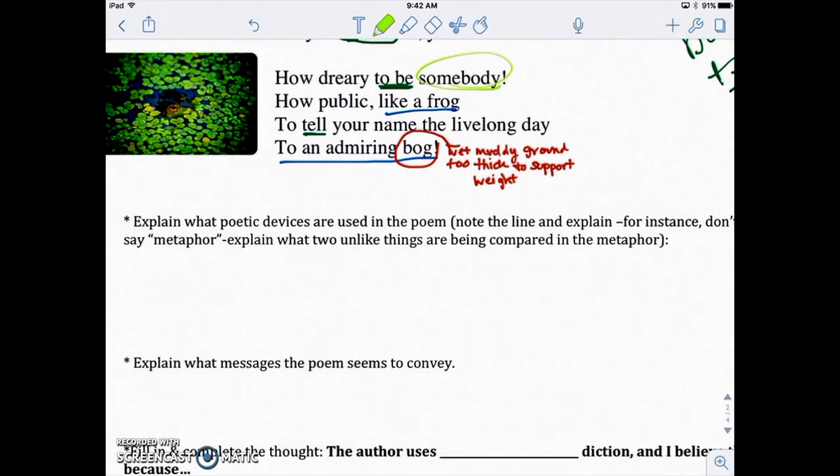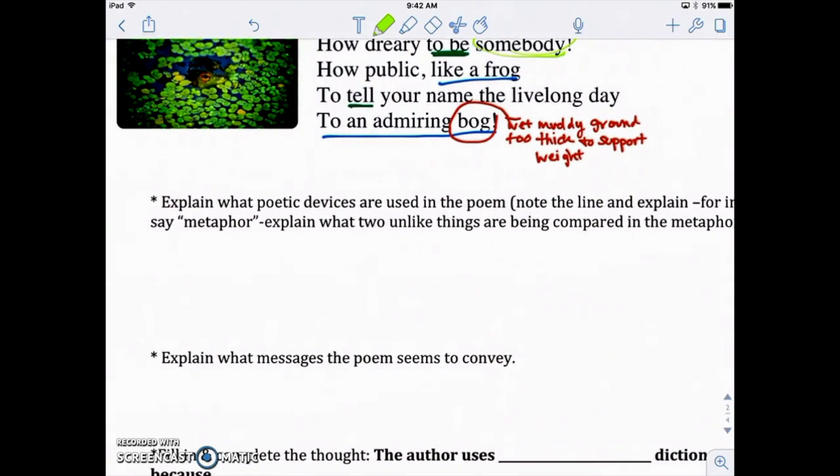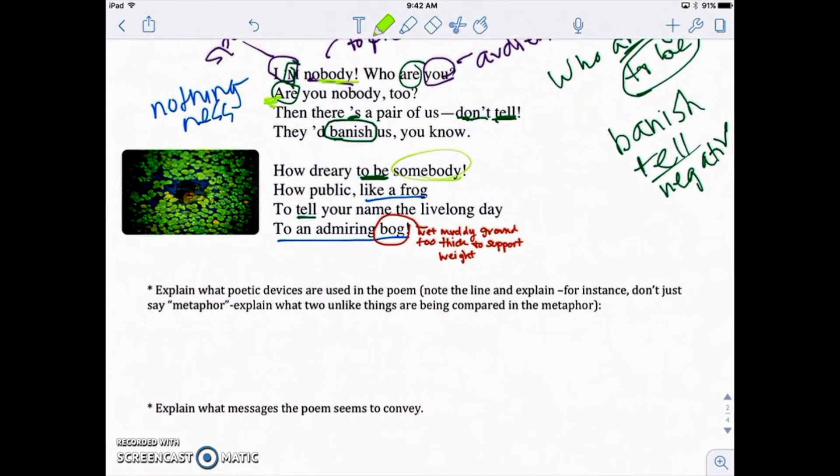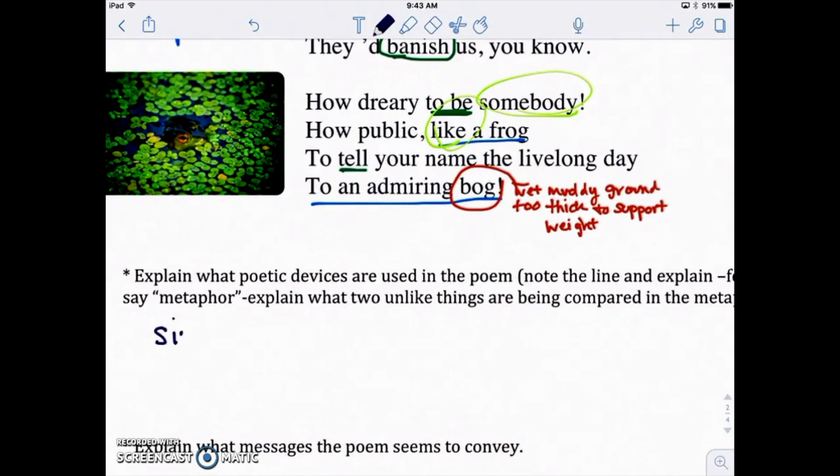It says, explain what poetic devices are used in the poem. Note the line and explain for instance, don't just say metaphor. Explain what two unlike things are being compared in the metaphor. Well, we actually identified the main image as the frog, right? Like a frog. So since it's like a frog, we know that's not just a metaphor. That is a simile. So down here, we're going to write in that that is our simile. I'm going to write it in a better color here. Maybe a dark blue. Okay. So we do have a simile, but once again, I can't just identify that it is a simile.